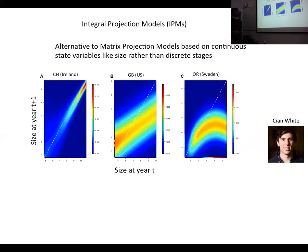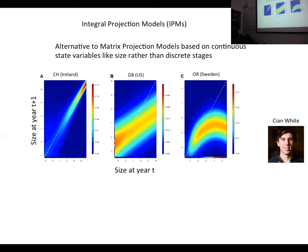Here I'm presenting some preliminary results from a student who worked with us last year. He started working on integral projection models with three populations — one in Ireland, one in the United States, and one in Sweden. This is a representation of an IPM where the x-axis shows plant size in year T and the y-axis shows plant size in year T+1, representing the probability distribution of sizes between one year and the next.